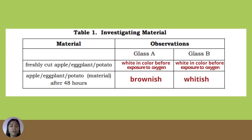These are the correct answers: In Glass A, the freshly cut apple, eggplant, or potato is white in color before exposure to oxygen. In Glass B, it is also white in color before exposure to oxygen. After 48 hours, the apple, eggplant, or potato in Glass A turned brownish, while in Glass B it remained whitish in color.